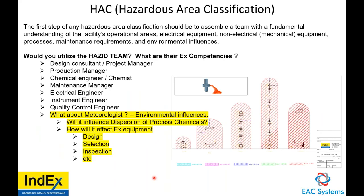For hazardous area classification, the first step should be to assemble a team with fundamental understanding of the facility's operational areas — electrical equipment, non-electrical mechanical equipment, processes, maintenance requirements, and environmental influences. A safety engineer would also be needed; sometimes that safety engineer is included as the quality control or HSEQ engineer, covering ISO 9001, 14001, and 45001 — all in one engineer.